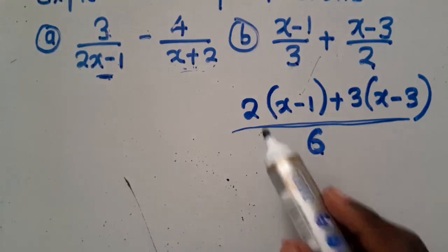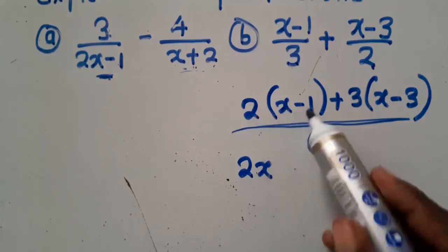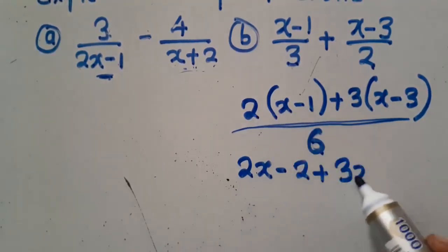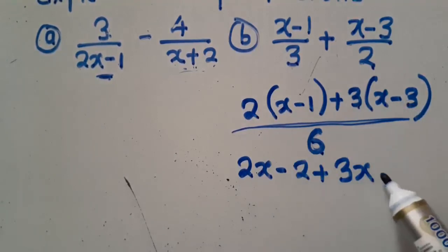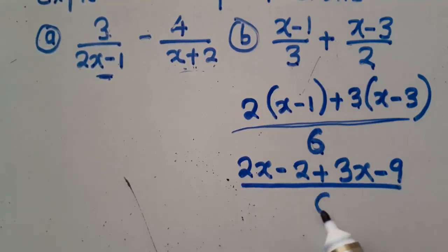This is what you get to do. You start now multiplying. 2 times x, that is 2x. 2 times 1, that is 2. Plus 3 times x, 3x. 3 times negative 3, that is negative 9. Then you do this. Common denominator 6.